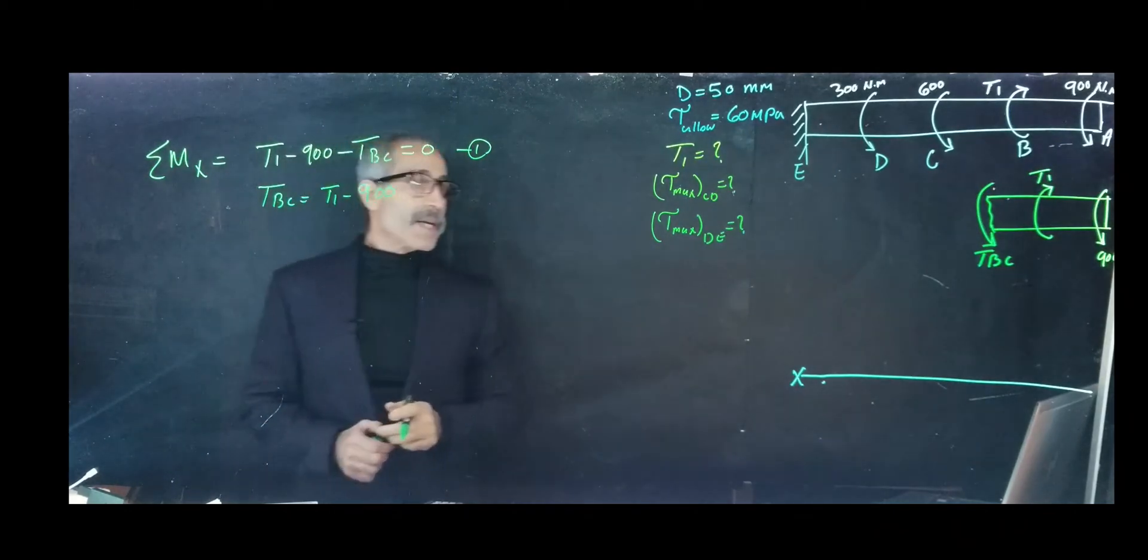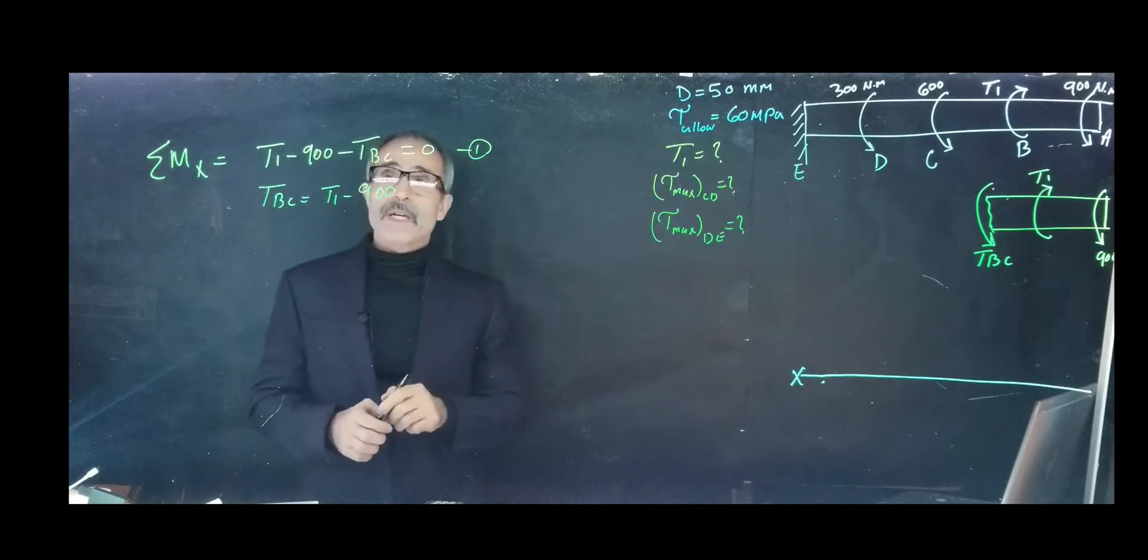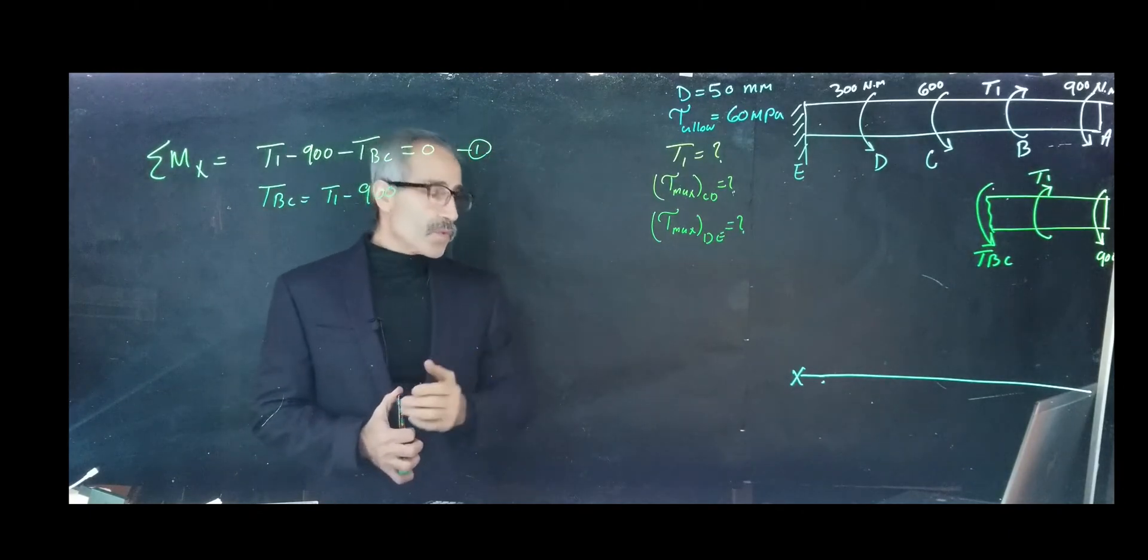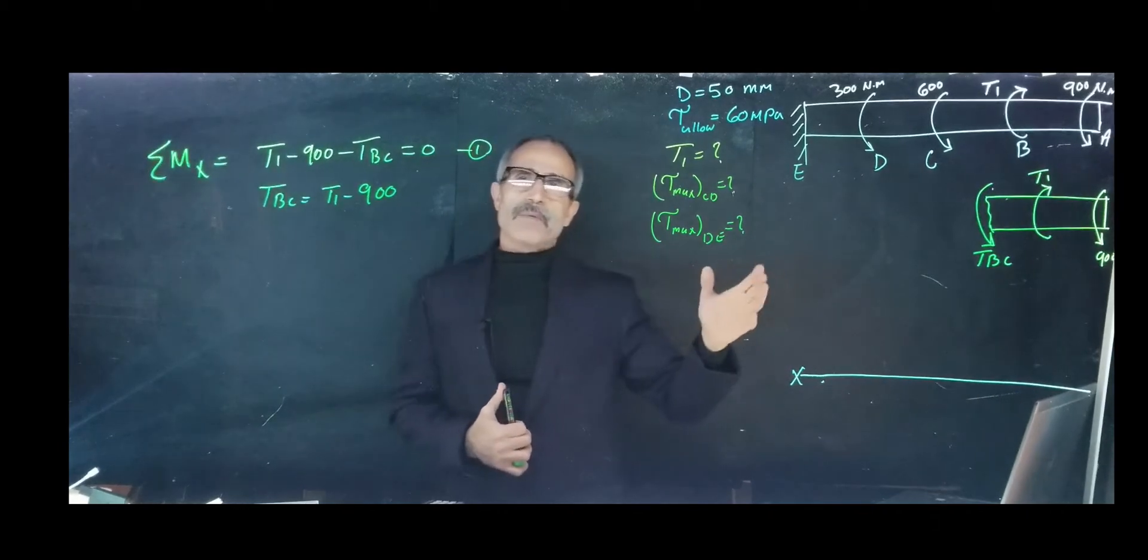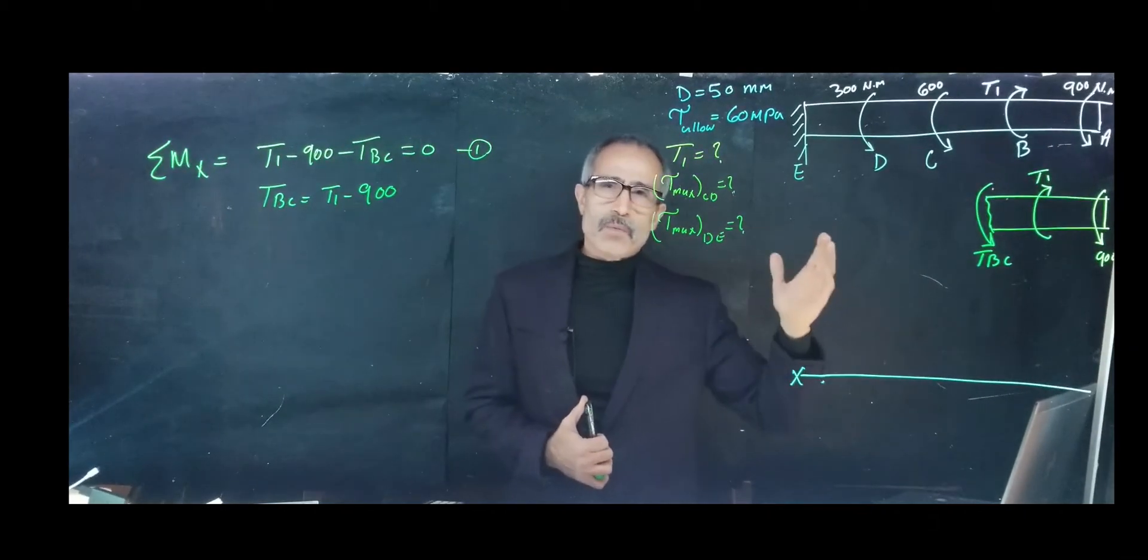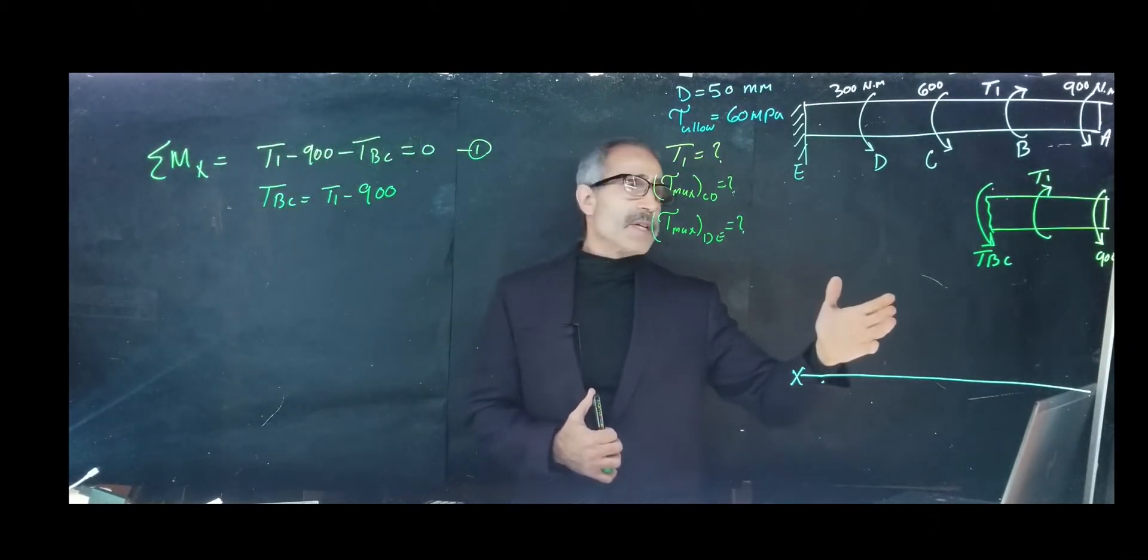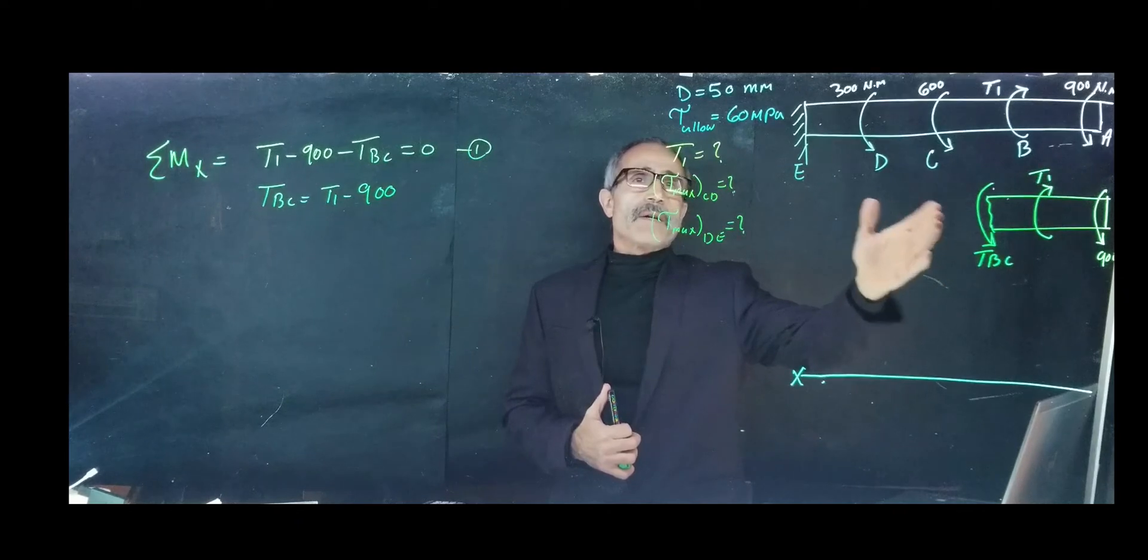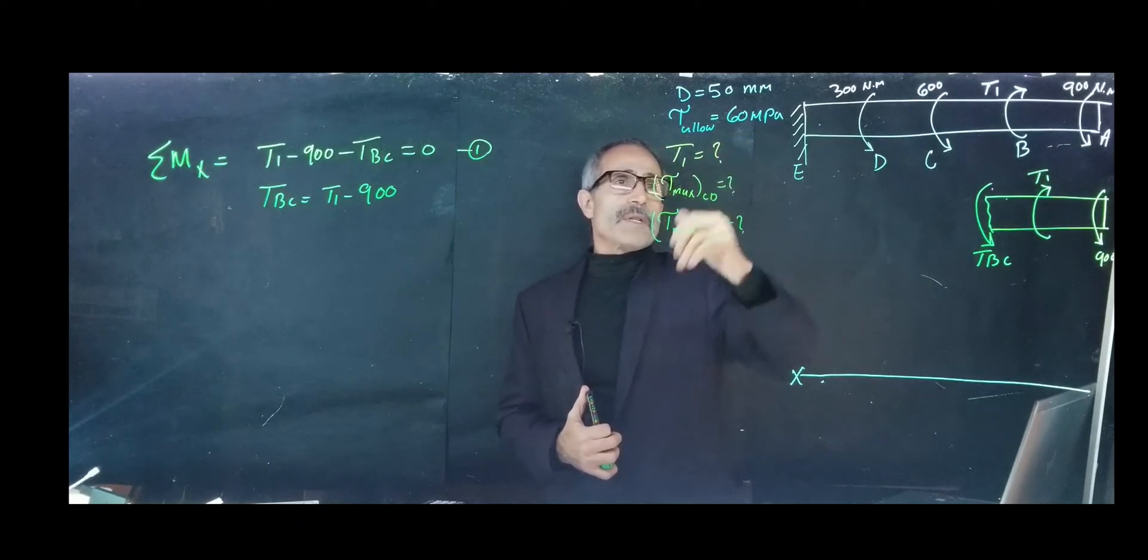Now we're looking for another equation. Let's assume that TBC is the maximum force that can be applied at the point of failure. What would this be if the shaft's going to fail or equal the allowable stress?